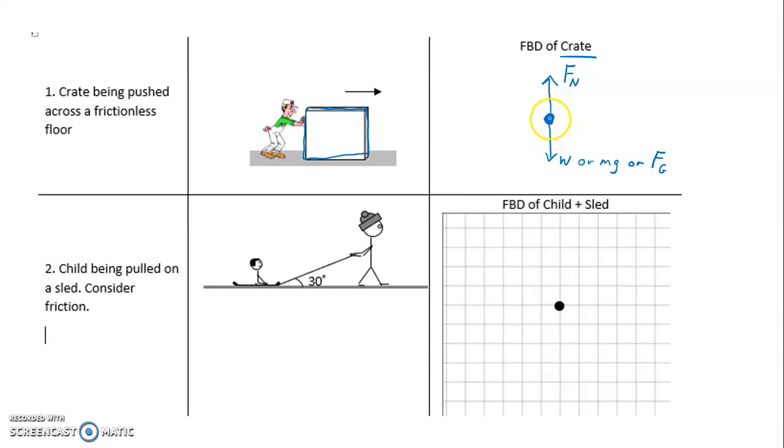The other force that the floor could exert would be a friction force. But the floor is frictionless in this scenario, so we don't have that to worry about. What else is touching the crate? Well the man is. The man is pushing on the crate to the right. So we could call this the applied force. We could also call it the force of the man.